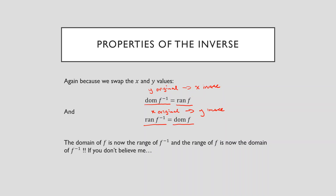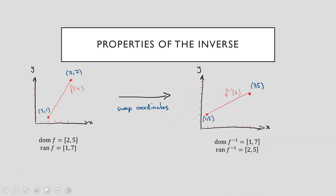Now, if you don't believe me, let me try and show you how that works. So here I've got two line segments. We'll start off with this one on the left. This is some line segment for a particular function f of x. The way that I've drawn it is so that we can see the domain of this particular function. I've restricted the domain — it's a straight line graph of some kind — and I've restricted the domain to be from two to five. Those are the x values for which my function exists. So my domain is from two to five. If I look at those points and then determine what the range is, my range goes from negative one up to positive seven. There's my range.